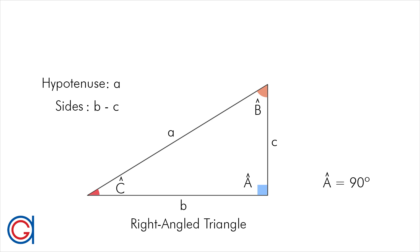So in this type of triangle, it always satisfies a very important theorem called Pythagoras' theorem, which states the hypotenuse squared is equal to the sum of the squares of the other two sides, or more simply put, A squared is equal to B squared plus C squared, where A is always the hypotenuse and B and C are the other two sides, or legs.